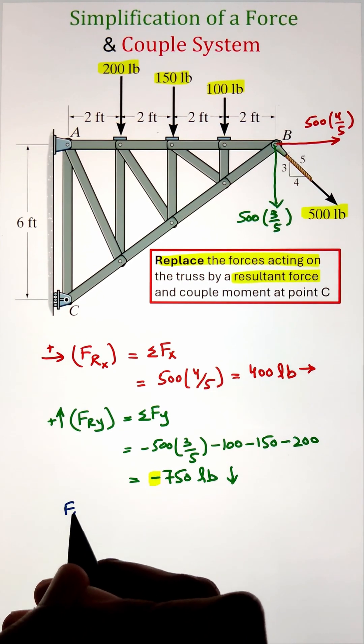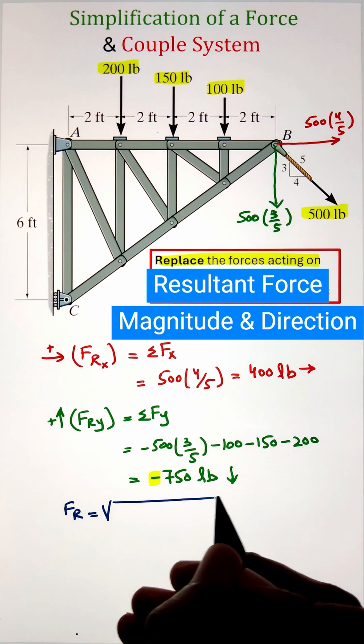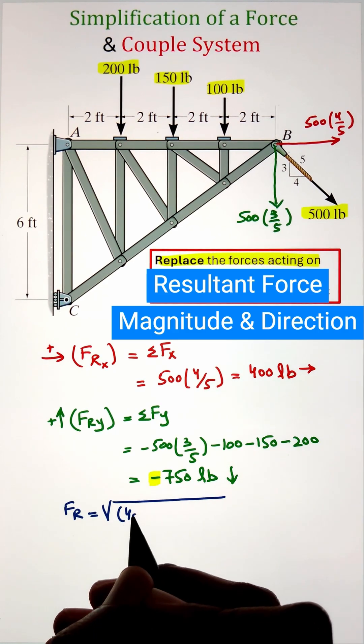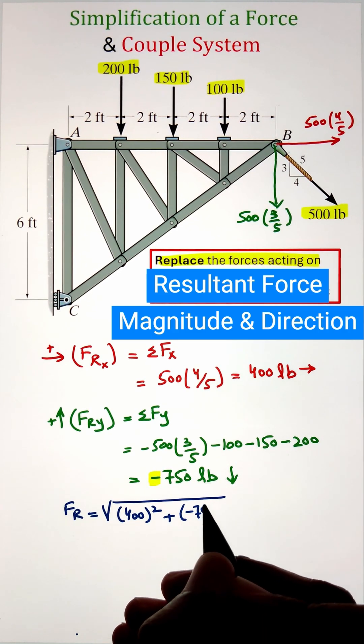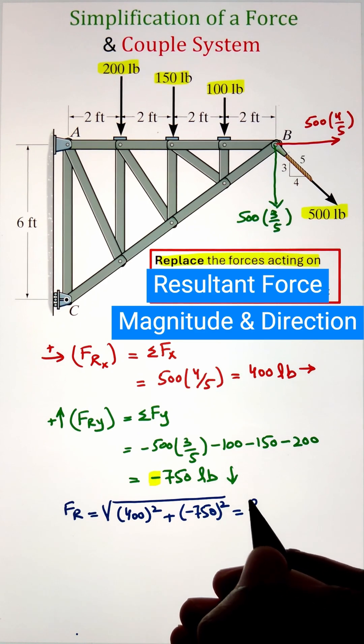Now to calculate the resultant force magnitude we can apply our formula of square root of x component squared plus y component squared. This gives us the final value of 850 pounds.